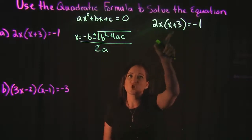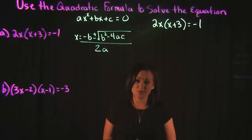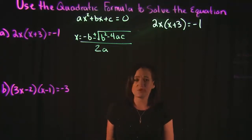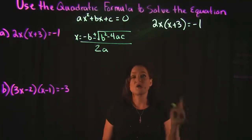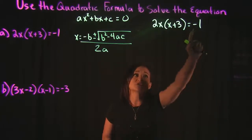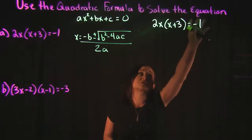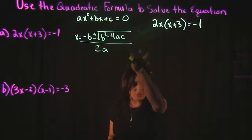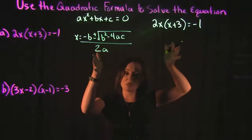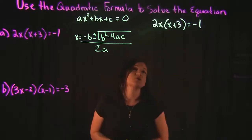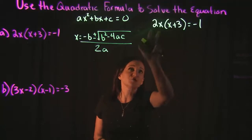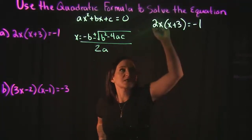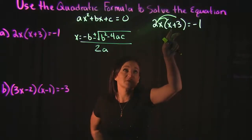There's a little cleanup needed first. If there's any multiplication in your equation, take care of that — any distributive property, combining like terms. Your equation needs to be set equal to 0, so whatever's on the other side needs to get moved over. Everything needs to be on one side of the equation. So the first thing I'm going to do is take care of this multiplication: we have 2x times x plus 3, so we distribute 2x to the x plus 3.